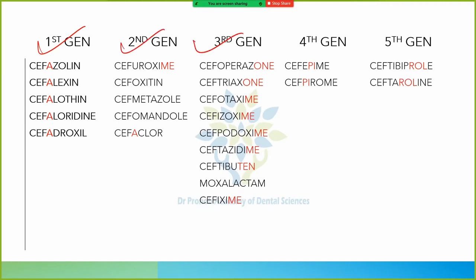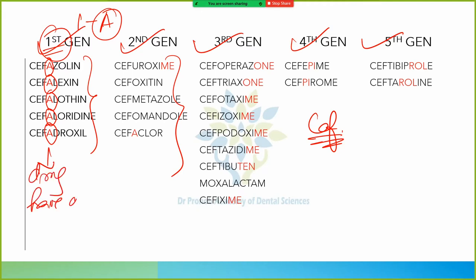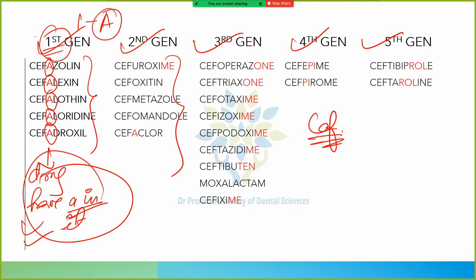There are different drugs in each generation, so how do we remember them? Every cephalosporin generation starts with 'cef.' Here is the trick: first generation — 'first' corresponds to the first alphabet 'a.' So every first generation cephalosporin has an 'a' in it. For example: cefazolin, cefalexin, cefalothin, cefaloridine, cefadroxil — every drug has 'a' in it, marked in red for visualization.